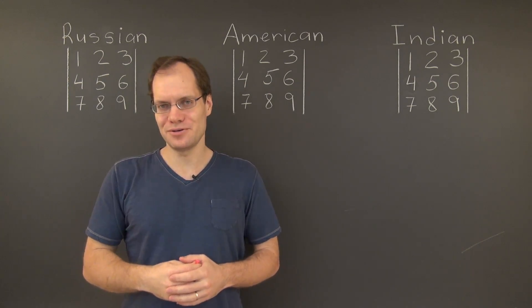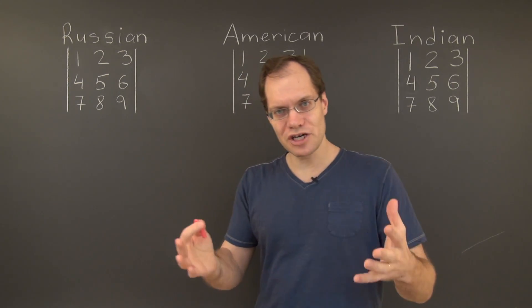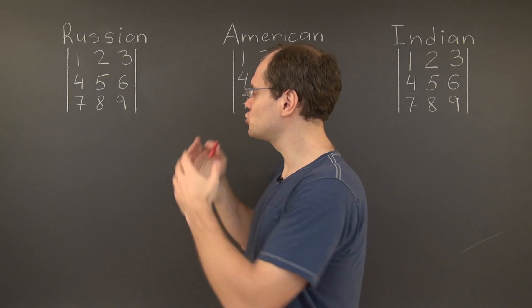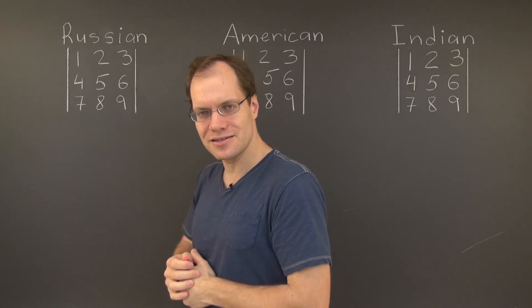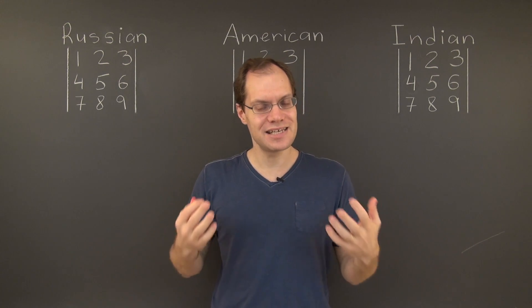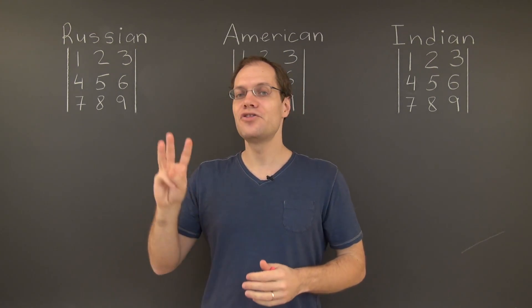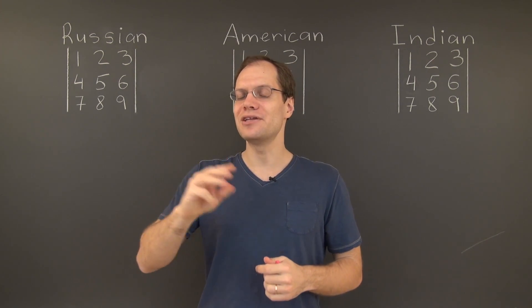Let's begin with the Russian approach. In order to master the Russian approach, you have to learn to look at the matrix and to directly identify the patterns that correspond to the six terms in the determinant, three positive terms and three negative terms.